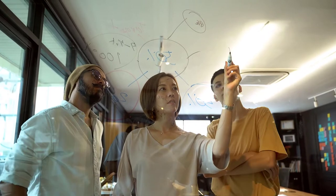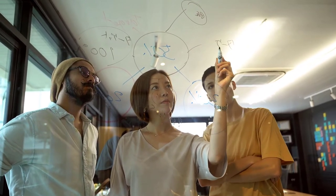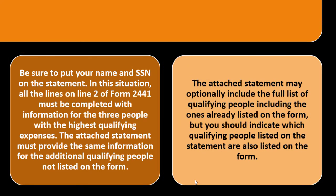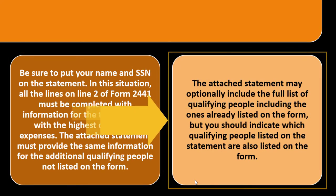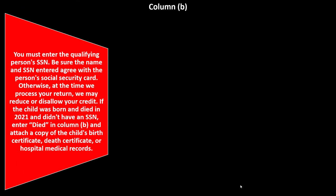There are three spaces for three people you spent qualifying money on. If you need more, attach a statement. The attached statement may optionally include all qualifying people — including those already listed on the form — but indicate which ones are also listed on the form.